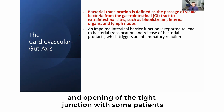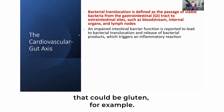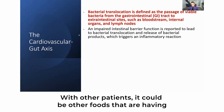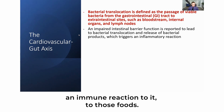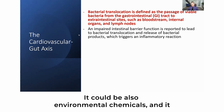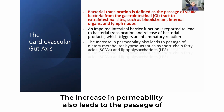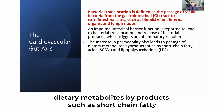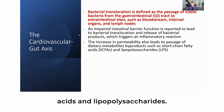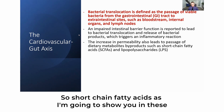Food sensitivities cause an inflammatory reaction and opening of the tight junctions. For some patients that could be gluten; for others it could be other foods causing an immune reaction. It could also be environmental chemicals or certain medications that impair the gut barrier. The increase in permeability also leads to the passage of dietary metabolites and byproducts such as short-chain fatty acids and lipopolysaccharides.